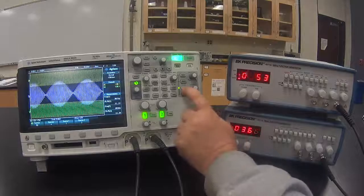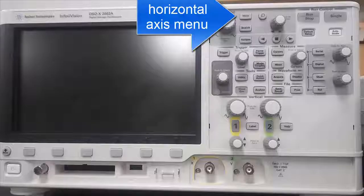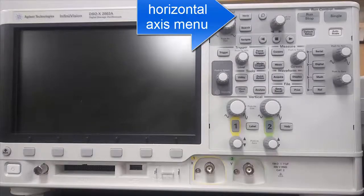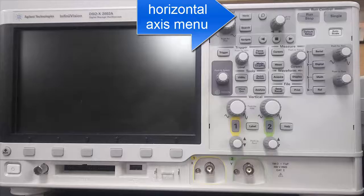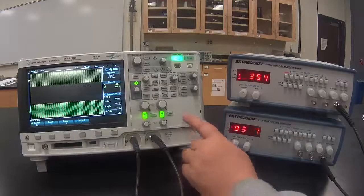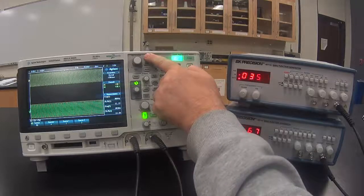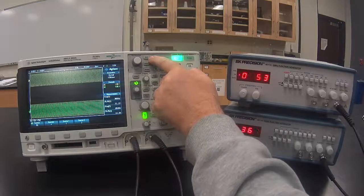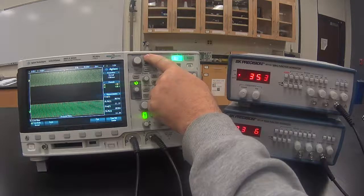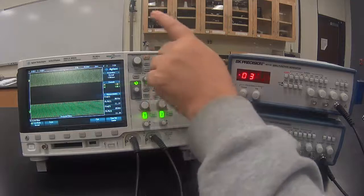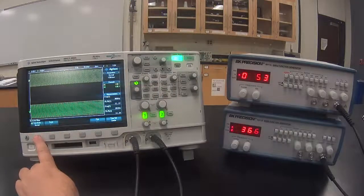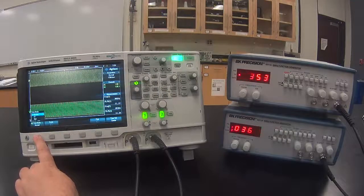Now turn the math function off. Now we will change how we are using the horizontal axis by pressing the horizontal axis menu. After we press it, we come down here and we select XY.